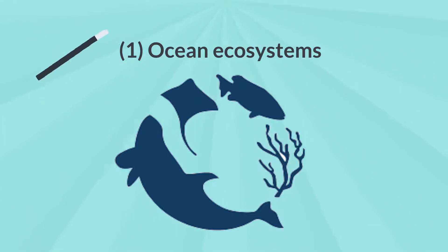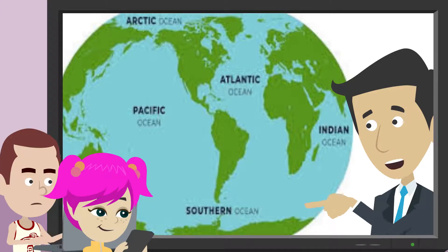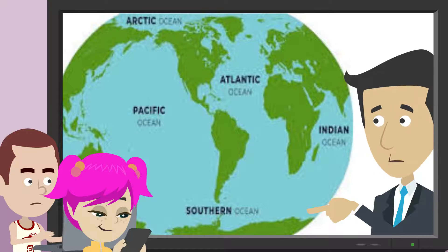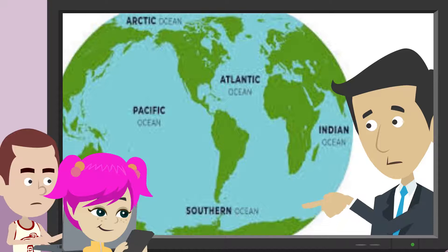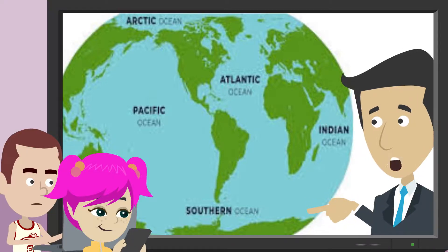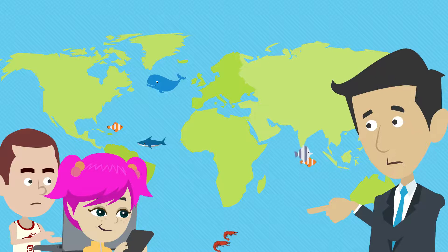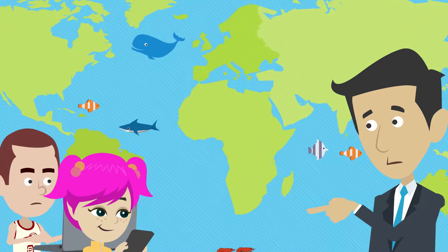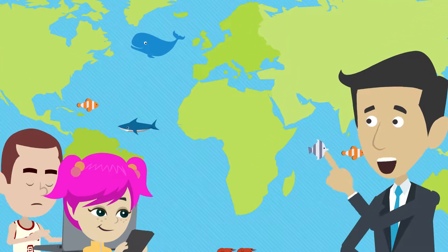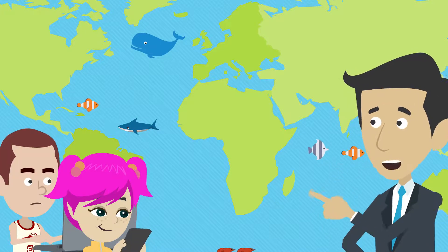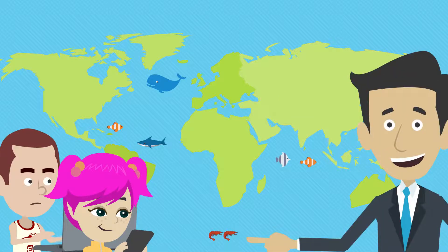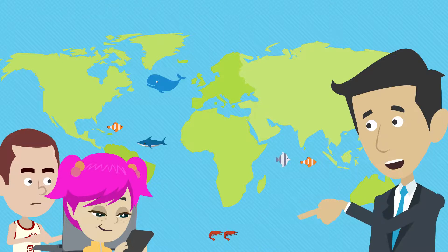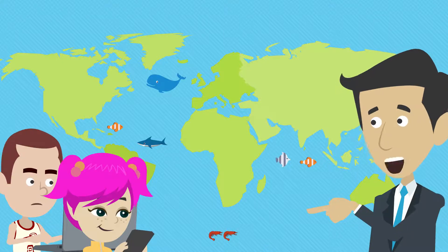Ocean Ecosystems. The Earth has five main oceans: Pacific Ocean, Indian Ocean, Arctic Ocean, Atlantic Ocean, and Southern Ocean. The ocean is home to all kinds of creatures. The water near the equator is warm and has an abundance of tropical fish. The water in the Arctic and Southern Oceans is cold but full of life. The largest population of krill is located under the ice of the Southern Ocean.